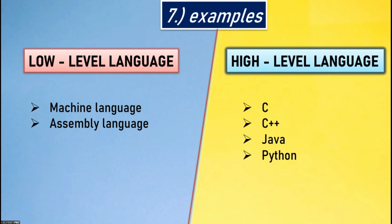Seventh point: examples. Low level language examples: machine language and assembly language. High level language examples: C, C++, Java, and Python.